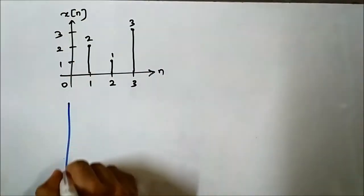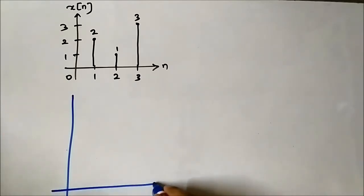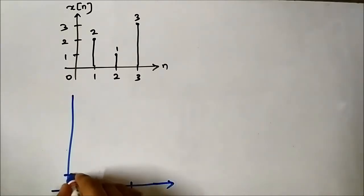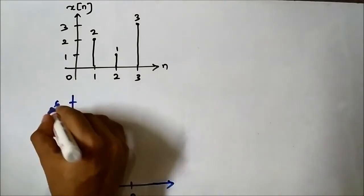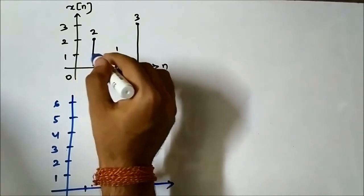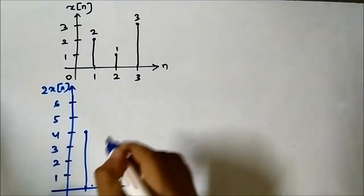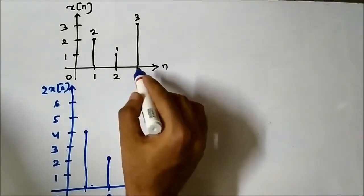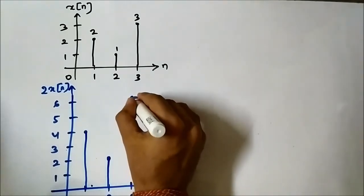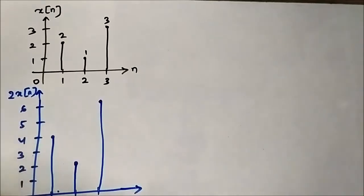For 2x[n], the amplitude will get doubled, so we have to draw a slightly longer amplitude axis. The time axis will stay the same: 1, 2, 3, 0, 1, 2, 3, 4, 5, 6. At n=1, the amplitude is 2, so it will become double — 4. At n=2, the amplitude is 1, so it will become 2. At n=3, the amplitude is 3, so it will become 6. This is 2x[n].